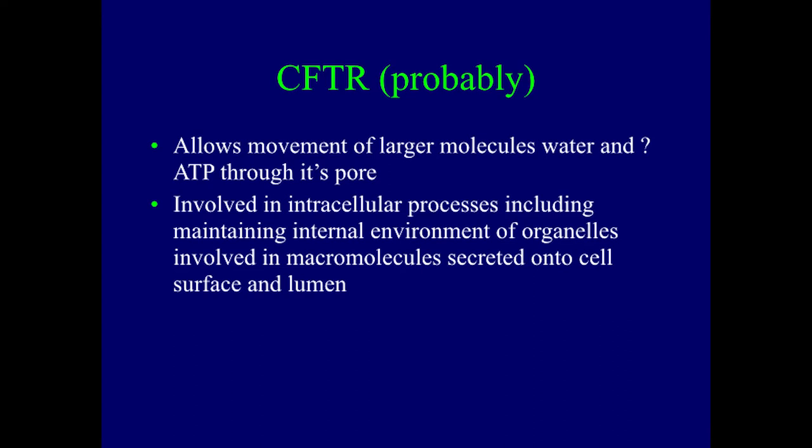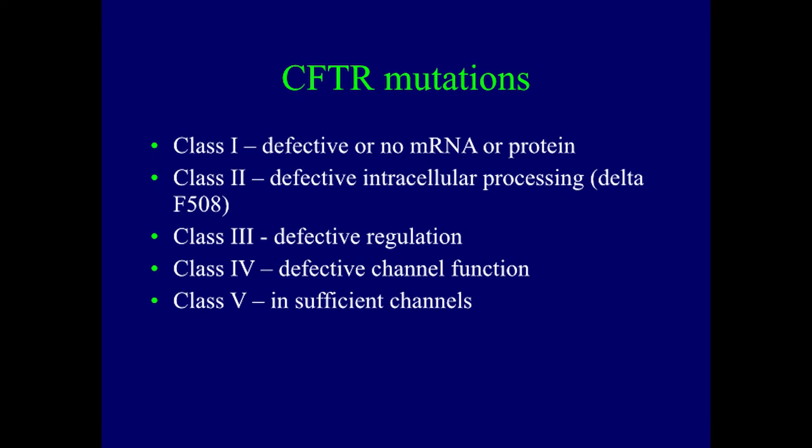There are different kinds of mutations of the CF gene, and depending on the mutation determines whether or not you're going to be producing any functional CFTR. Class 1 mutations have a major defect — you would know if you have this because there's an X at the end of the genetic name for your mutation — meaning no mRNA is produced, a stop mutation, so you're not going to make the CFTR at all. Your levels are zero, so you're going to have no function from CFTR.